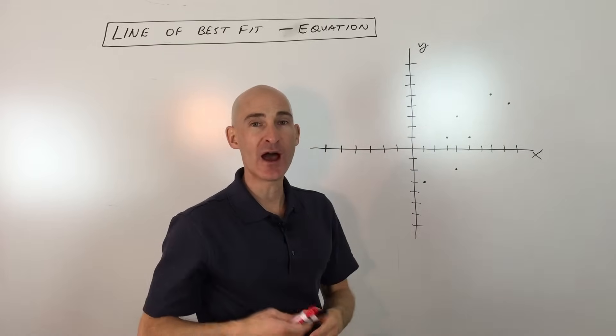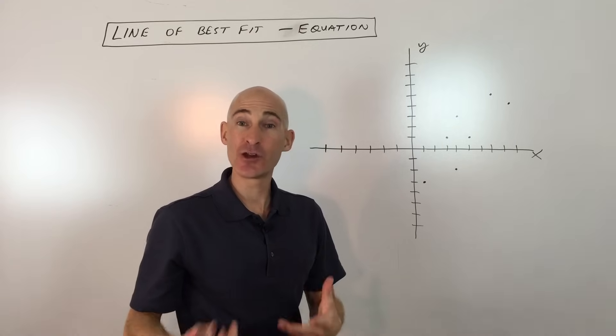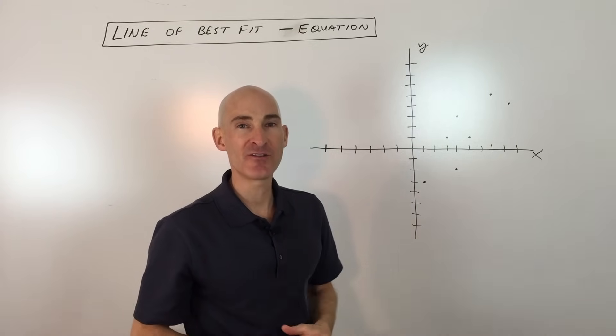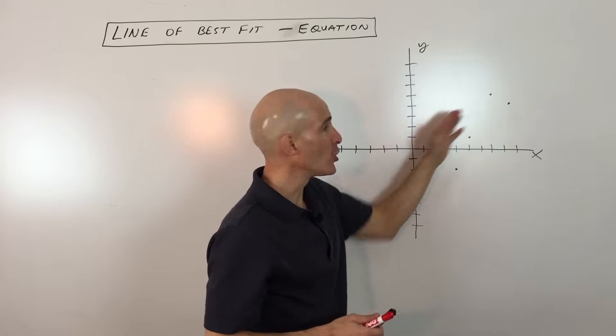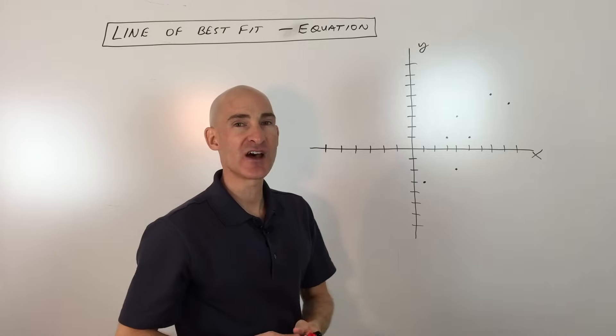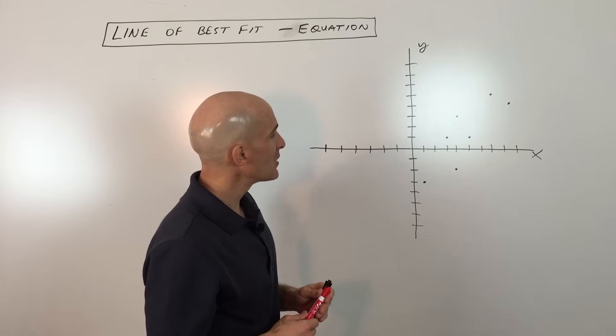Now you can get an exact answer, there's a linear regression feature on your calculator that will give you the exact line of best fit, the line that comes closest to the points as possible. But what we're doing here, this is just an algebra one video, we're just talking about how to approximate that line of best fit.